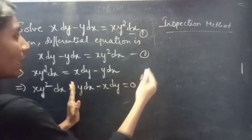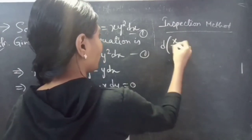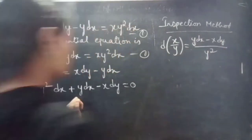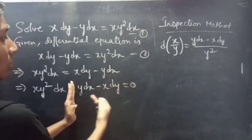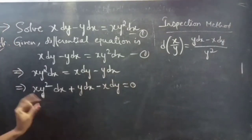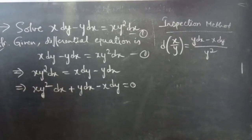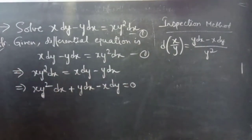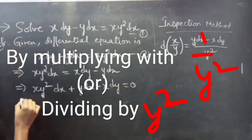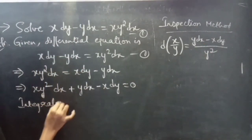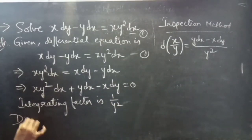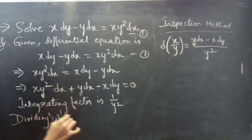Coming to the next two terms, we have the formula: d(x/y) equals y dx minus x dy divided by y squared. In order to apply this formula we need to divide by y squared. So commonly we need 1/y squared for both — the first term and the last two terms. The integrating factor will be 1/y squared.